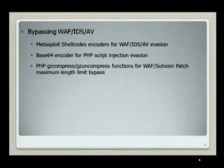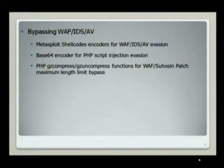Here are some simple techniques to bypass web application firewalls, IDS, and antivirus. When you upload your Metasploit shellcode, you can simply use a Metasploit shellcode encoder to bypass some of these security mechanisms. A base64 encoder can be used to encode your PHP script to prevent it from being detected as a PHP script injection by some web application firewalls. You can also use gz-compress and gz-uncompress from the Zlib library to compress your code and bypass maximum length limits.